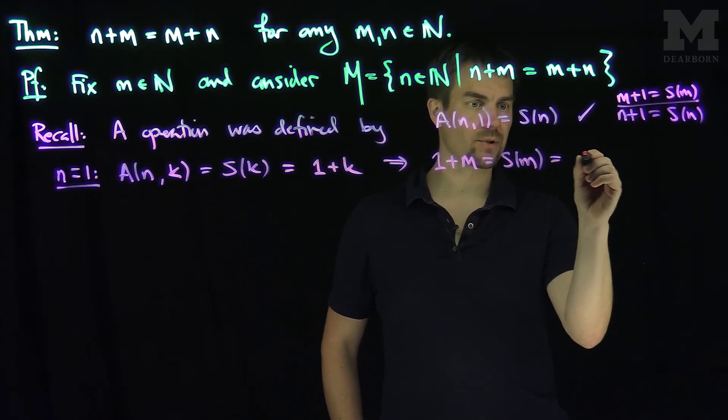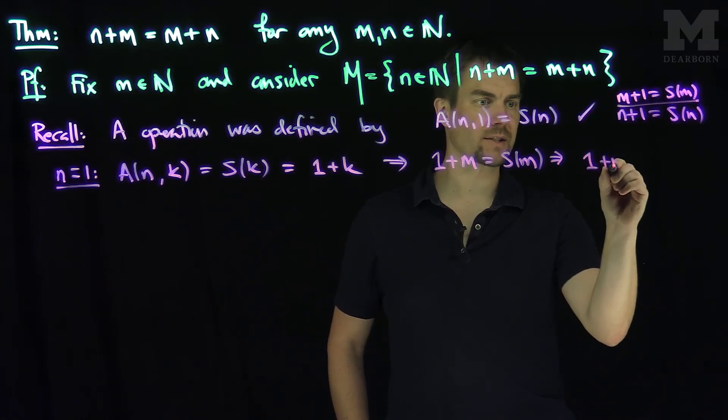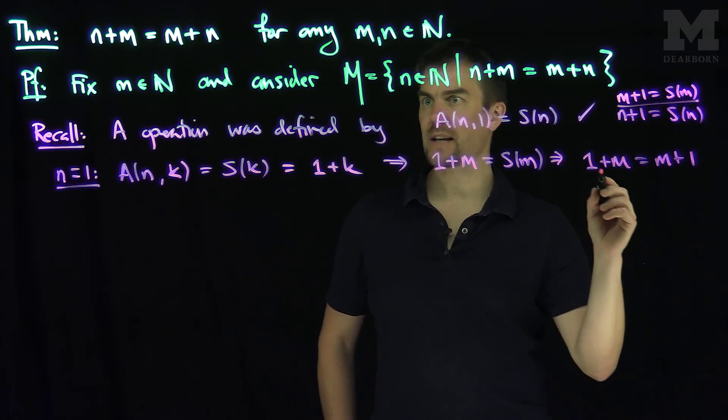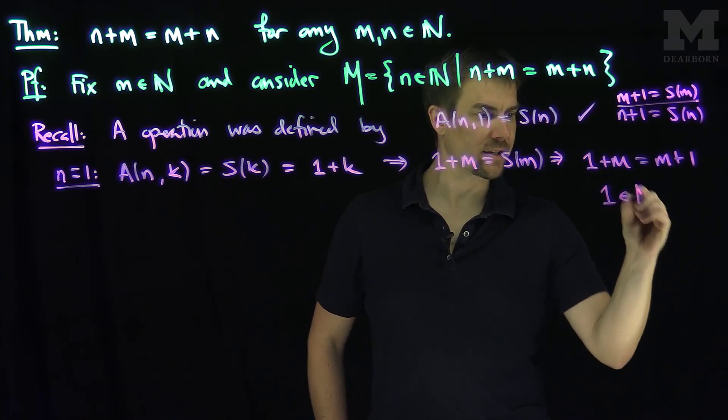Now, m plus 1 is equal to the successor of m, and 1 plus m is equal to the successor of m. So that tells us that 1 plus m is equal to m plus 1, and that tells us that 1 is in the set M.